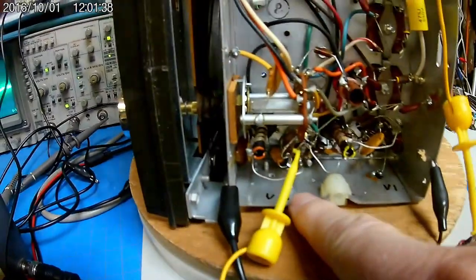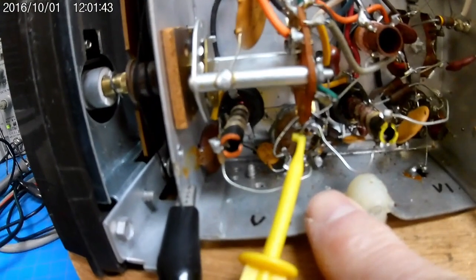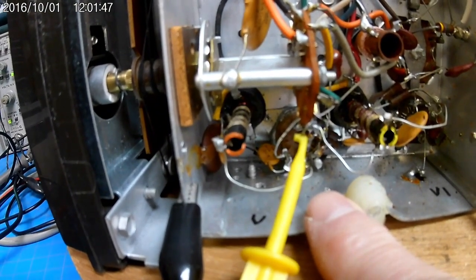I'm going into V2 on the Zenith radio that we were testing yesterday. It's going into the screen grid of the mixer tube of this radio.